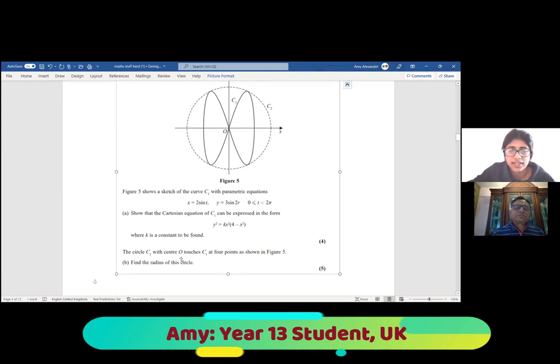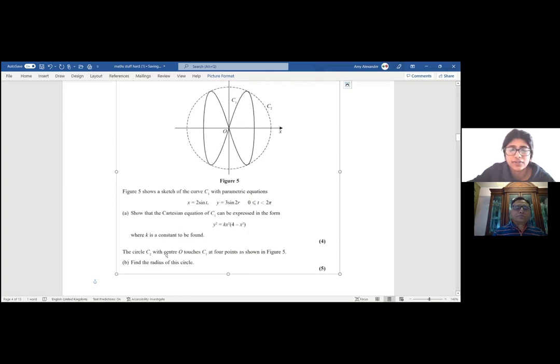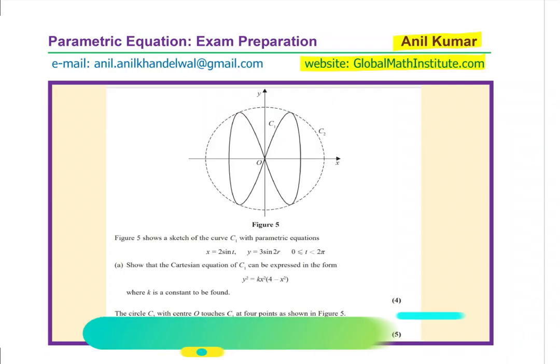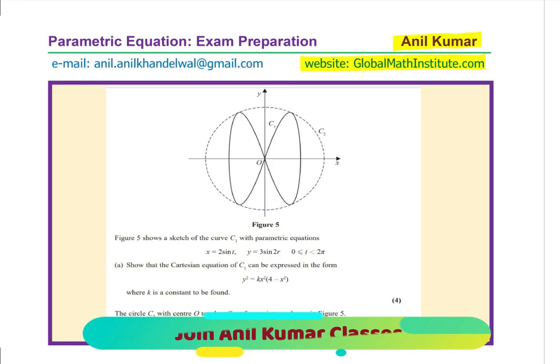And then the circle C2 with center at the origin touches C1 at 4 points as shown in figure 5. Find the radius of this circle. These are two different questions based on the given diagram and the parametric equation. Let us now see how do we solve such a question.